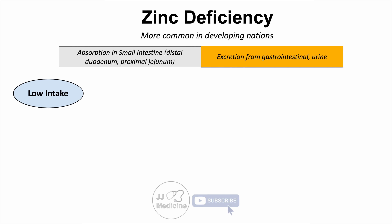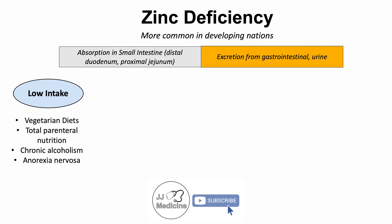One cause of zinc deficiency is low intake. This can result from strict vegetarian diets without proper supplementation, total parenteral nutrition (intravenous nutrition), chronic alcoholism leading to malnourishment and reduced zinc intake, and anorexia nervosa.